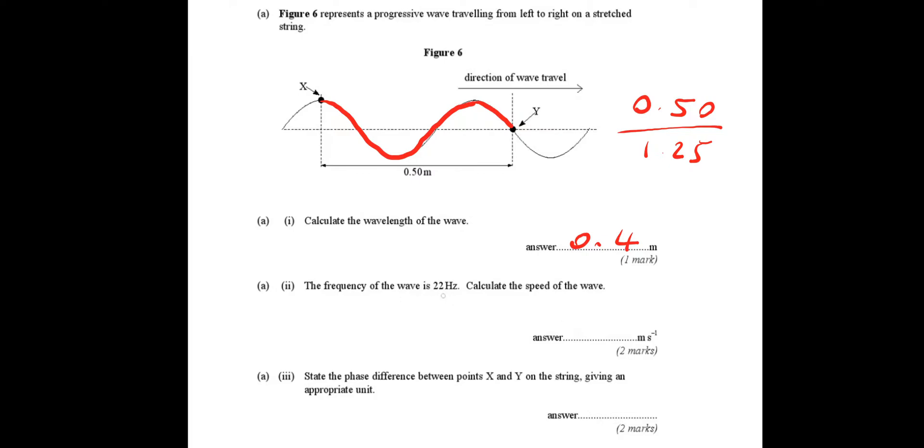So the next bit, we've got the frequency 22 hertz and we need the speed of the wave. So we can just use the wave speed equals frequency times wavelength. So that's 22 multiplied by 0.4, which gives a wave speed of 8.8 meters per second.